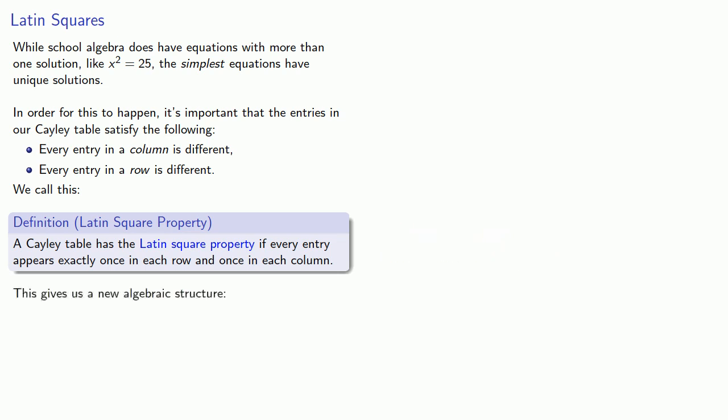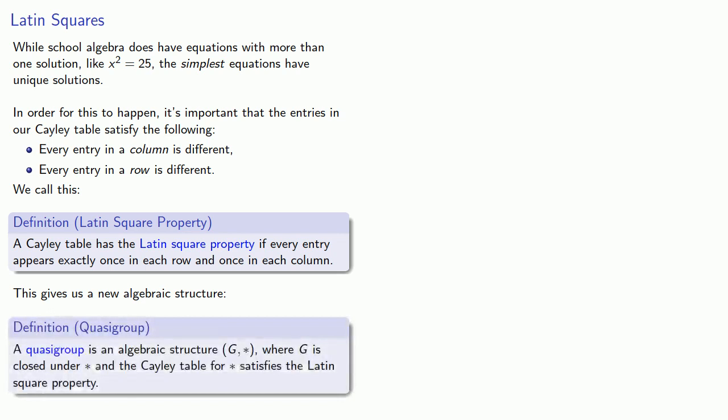And this is a new requirement, and so this gives us a new algebraic structure. A quasi-group is an algebraic structure G star, where G is closed under star, and the Cayley table for star satisfies the Latin square property.